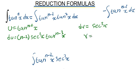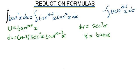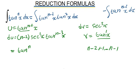And our v will equal tan(x), since when you integrate sec²(x) you get tan(x). Now applying integration by parts — u times v: we multiply tan^(n-2)(x) by tan(x), and since the bases are the same, we add the powers: (n-2) + 1 gives n-1. So this becomes tan^(n-1)(x), minus the integral of v du.